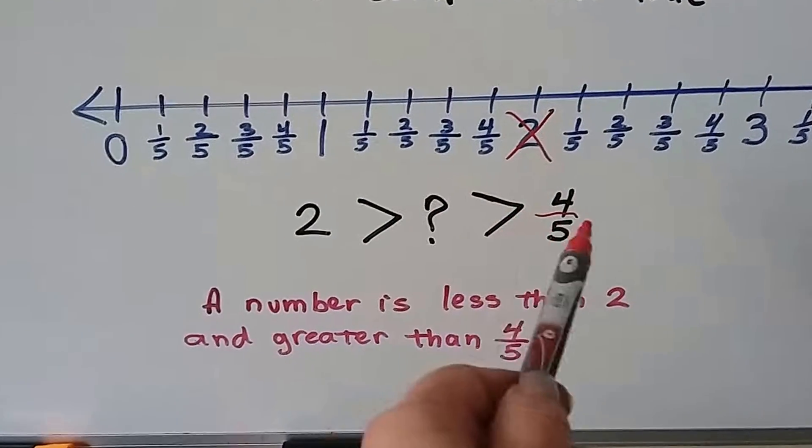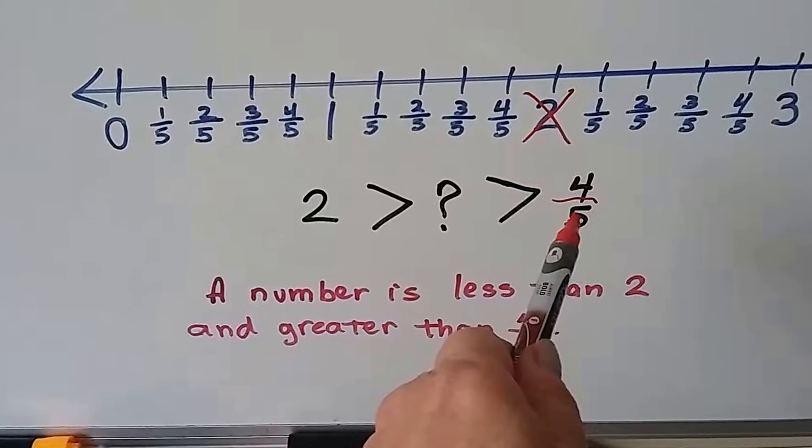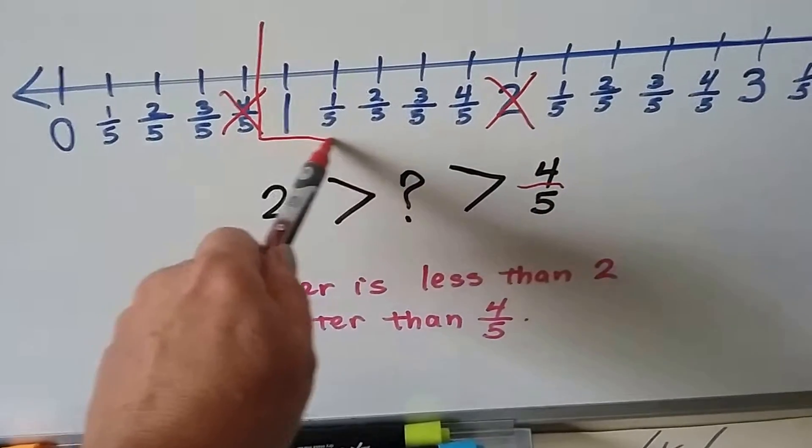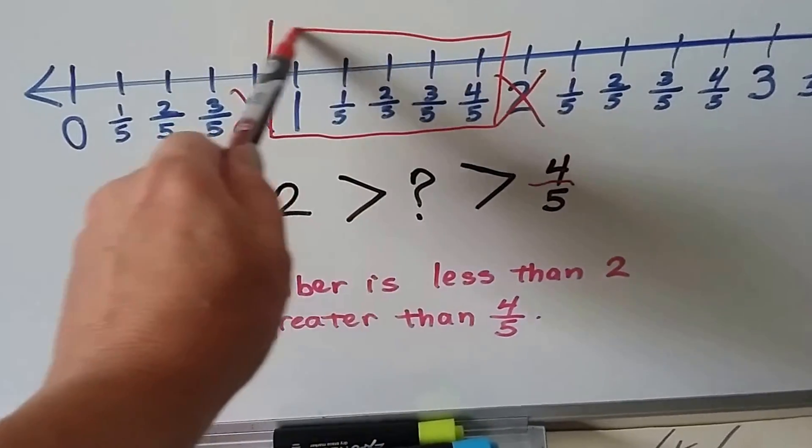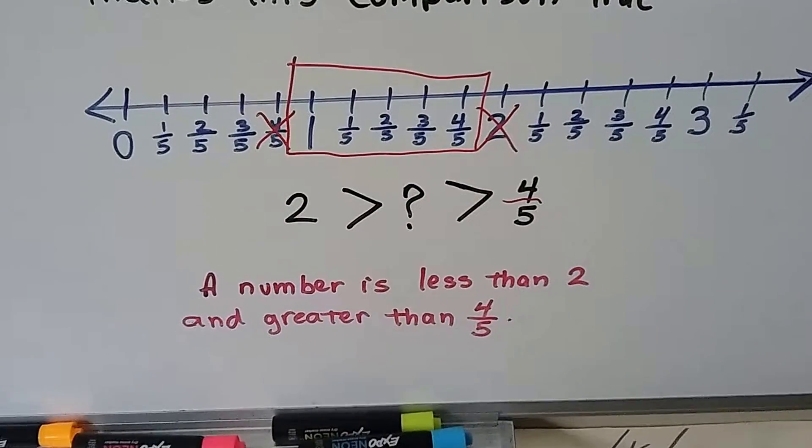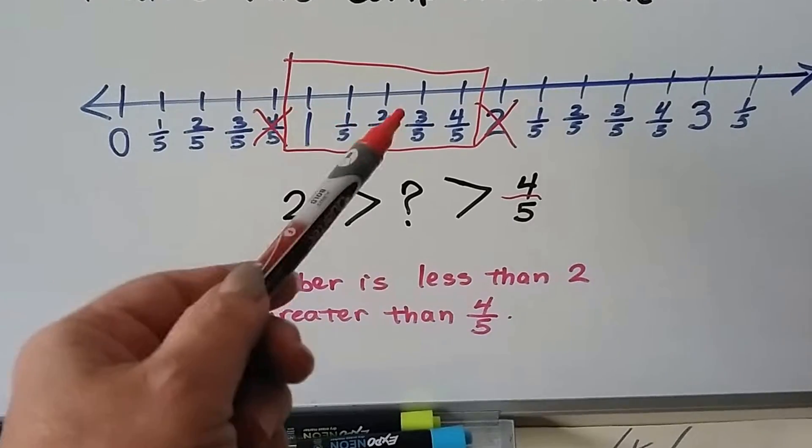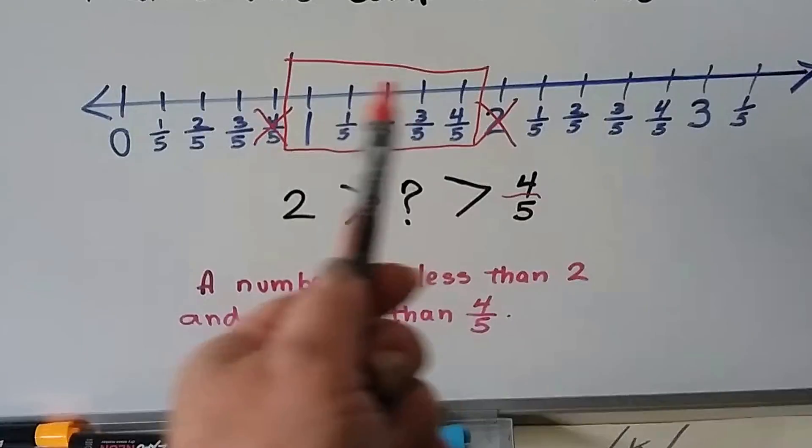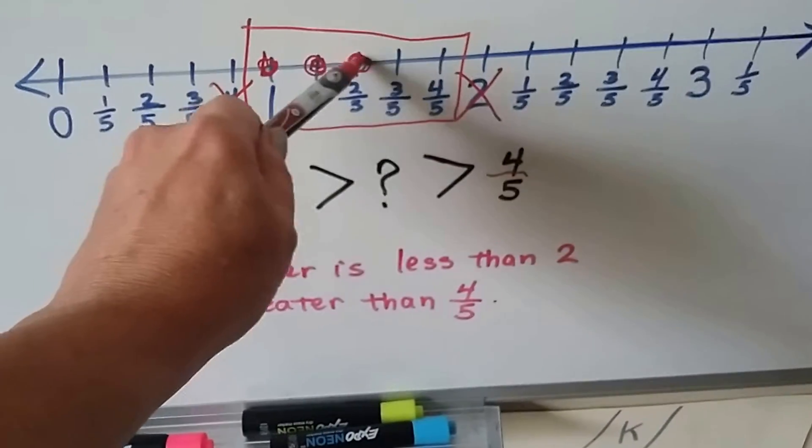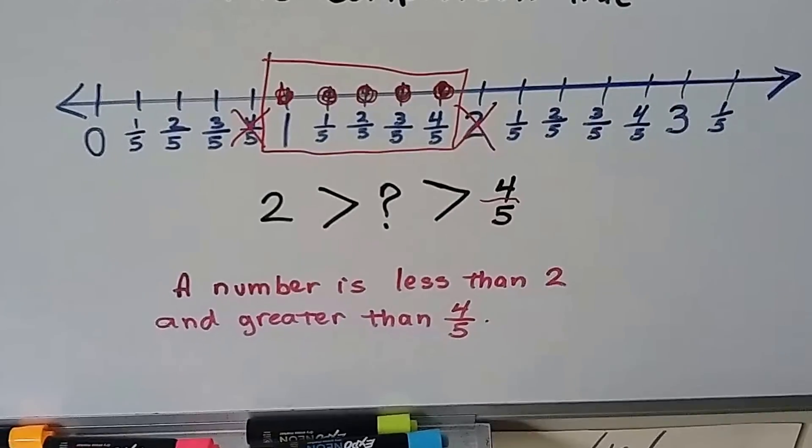And it says it's greater than 4 fifths. Well, that's not a mixed number, it's just 4 fifths by itself, so it's a proper fraction. That's way over here. So that means it's somewhere in between here. So if we put a dot on any one of these, it will make that comparison true. 1 is less than 2 and greater than 4 fifths. Every single one of these in here would make the comparison true.